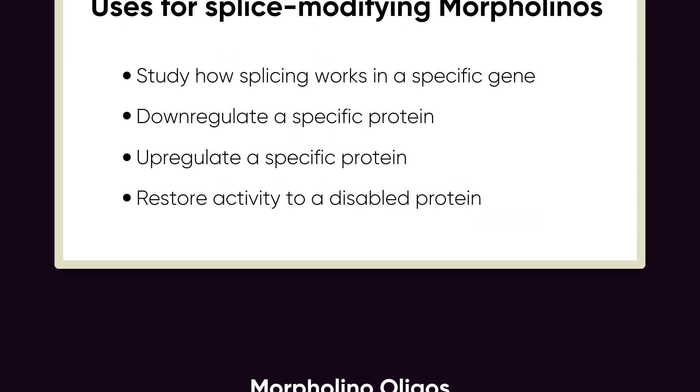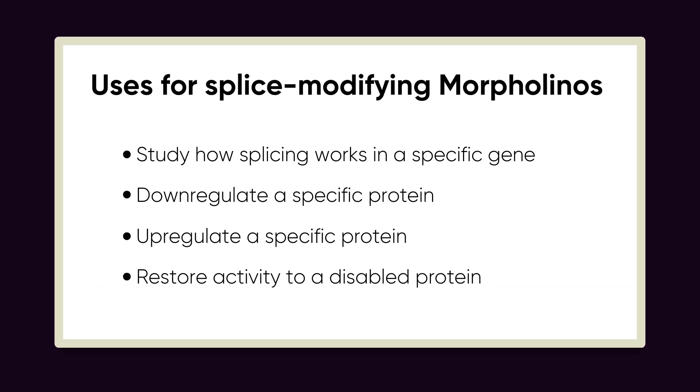Modifying splicing with Morpholinos is a powerful way to study how splicing works in a specific gene, to downregulate or completely silence a specific protein, to upregulate a specific protein, or to restore activity to a disabled protein.